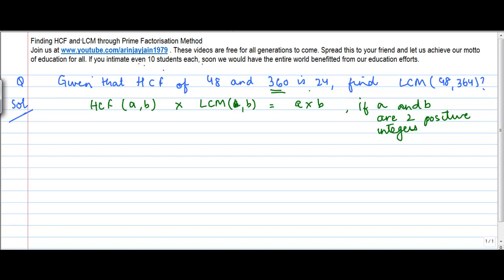Now here we have 360 and 24, so 360 and 24, both of them are positive integers, right? And we are told that the HCF of a and b is 24, so HCF of a and b, 24 into LCM of a and b...